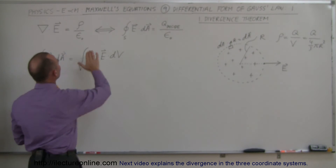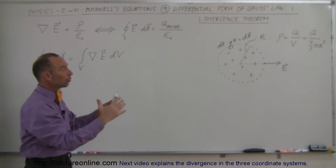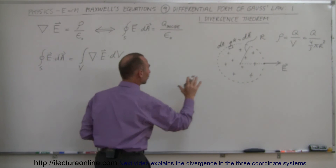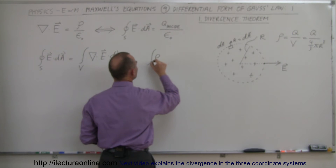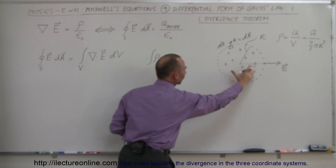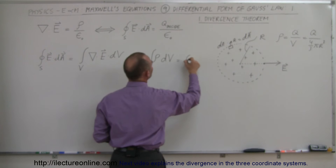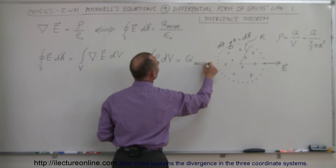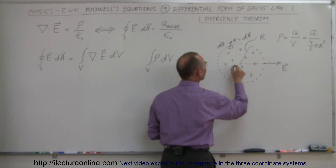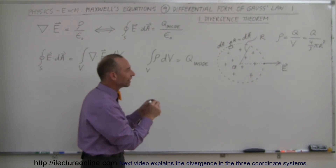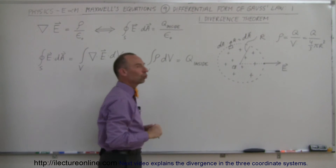The next step is to relate Q inside to the charge density. If we say the density is uniform throughout the entire sphere, we can also say that if we integrate the charge density throughout the Gaussian surface times dV, by definition that will equal Q inside. So if we take a small little volume, calculate how much charge is in there, find the density, multiply the density times dV, and integrate that over the whole volume, we'll get the total charge inside.